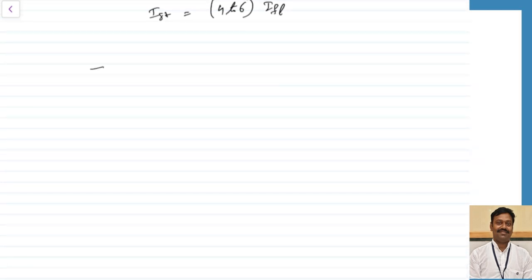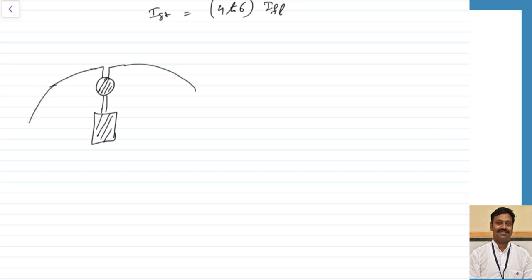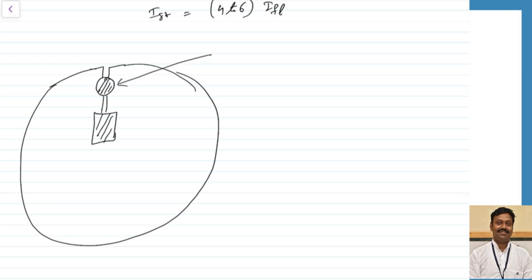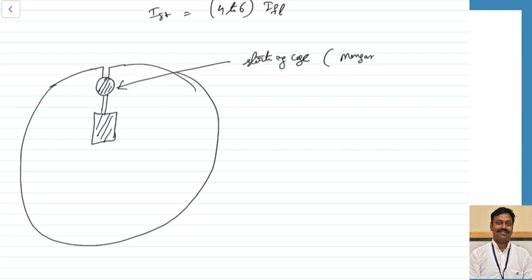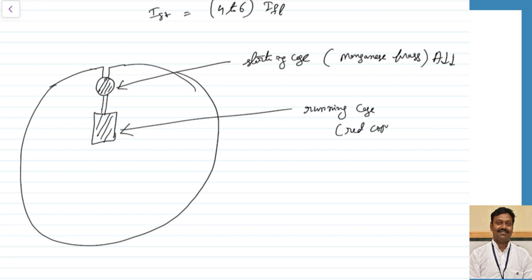The construction of the double cage induction motor is as follows. In the rotor, a bar is inserted on the outer side — this is the starting cage. Inside the notch, there is one more bar forming the inner cage. The starting cage is made up of manganese brass and has a very small cross-sectional area, giving it high resistance. The inner side is called the running cage, made up of red copper with a larger area so that resistance is less. Thus, the outer cage has more resistance and the inner cage has less resistance. An air gap is maintained in between the two cages.